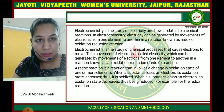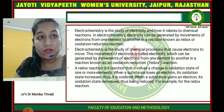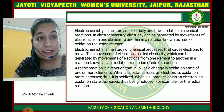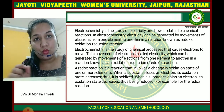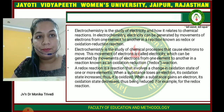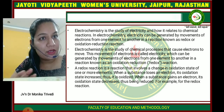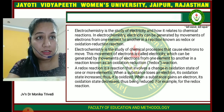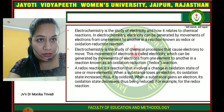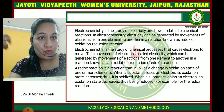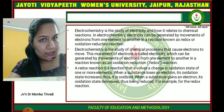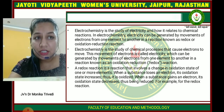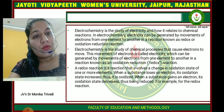Electrochemistry is the study of electricity and how it relates to chemical reactions. In electrochemistry, electricity can be generated by the movement of electrons from one element to another, and this is a reaction known as a redox reaction. The chemical process caused by electron movement generates electricity. A redox reaction is a reaction that involves the change in oxidation state of one or more elements.